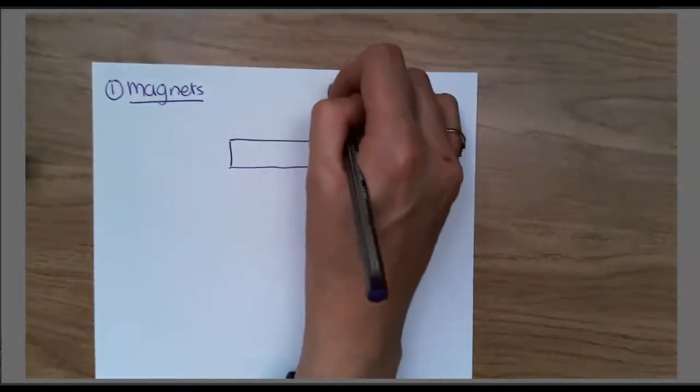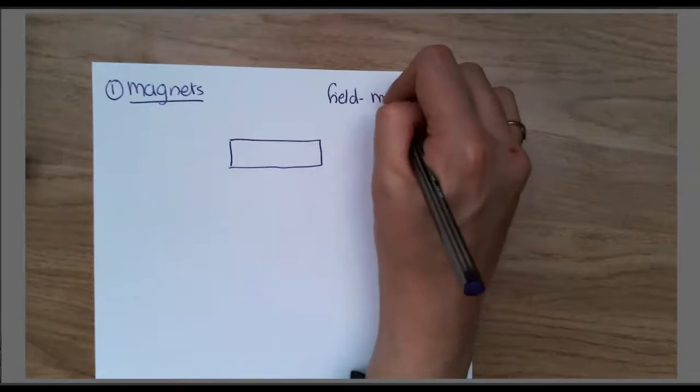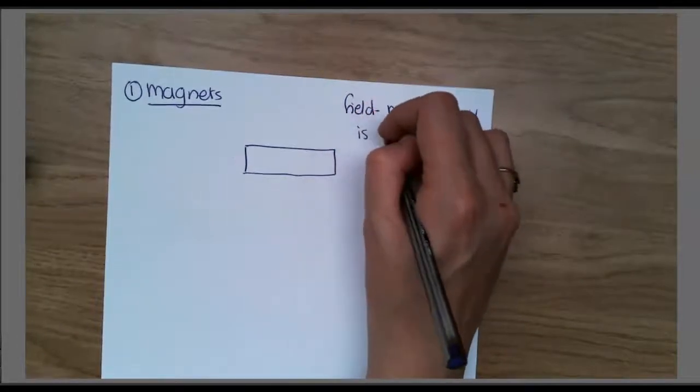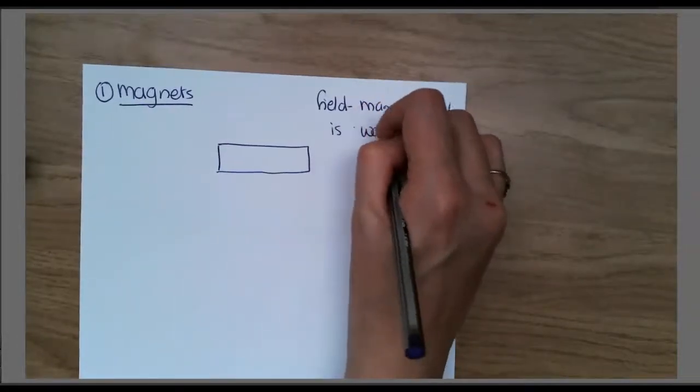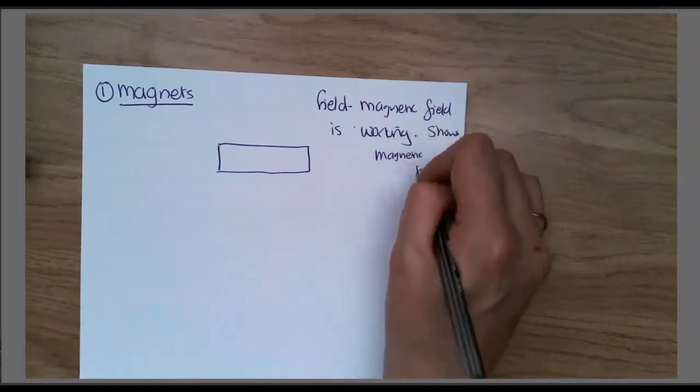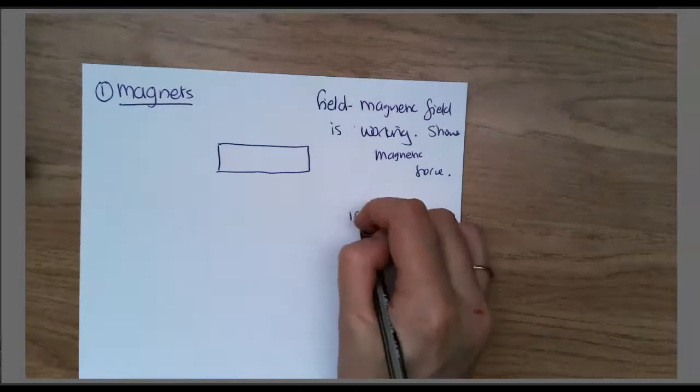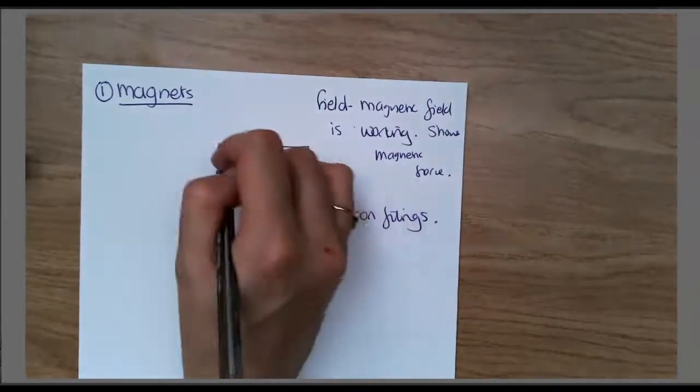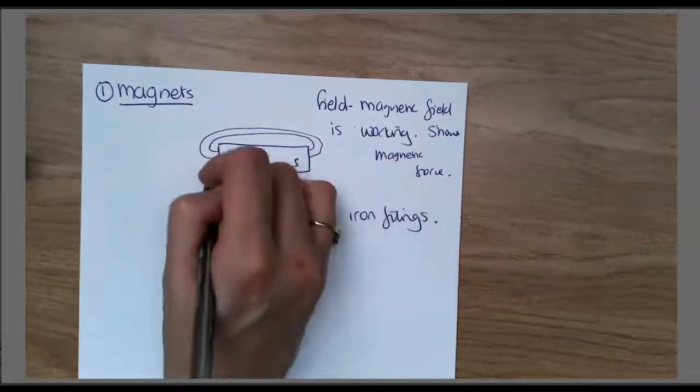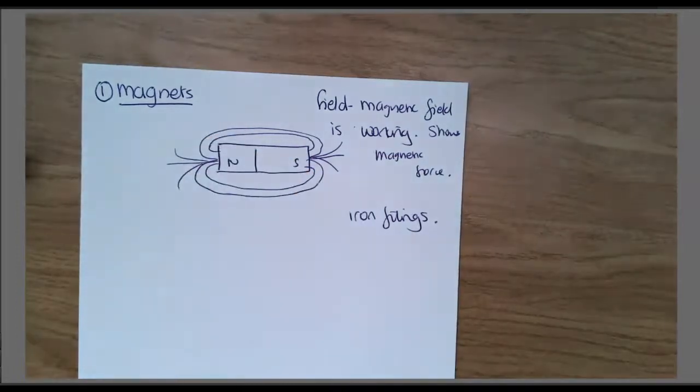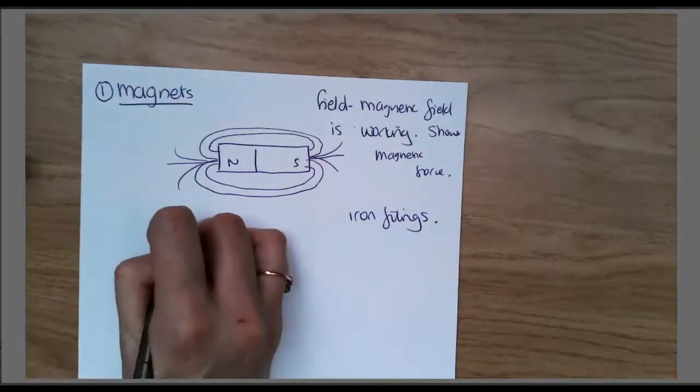On a magnet, the magnetic field is the area where the magnetic field is working and it shows magnetic force. We used iron filings to show the magnetic field. If you remember, the shape looks like this.